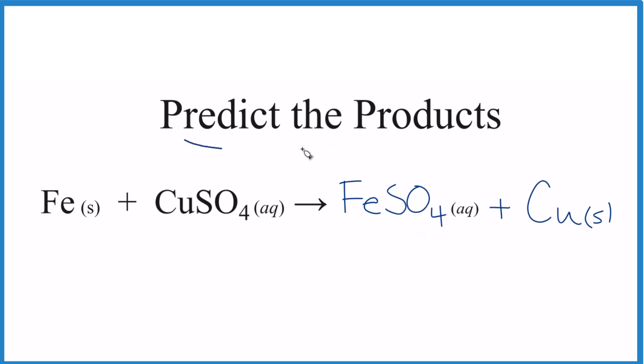That's it. This is Dr. B predicting the products of Fe plus CuSO4. We have a single displacement reaction. We end up with FeSO4 plus Cu. If you wanted to check and see if this reaction actually took place, you could use the activity series to make sure that this was actually the direction that this reaction went in. Thanks for watching.